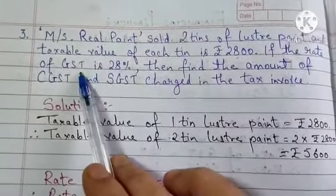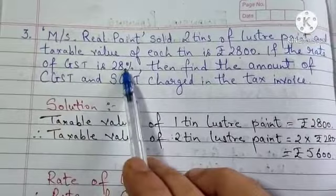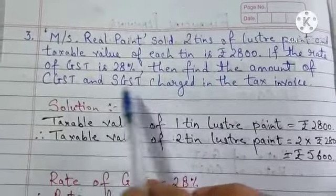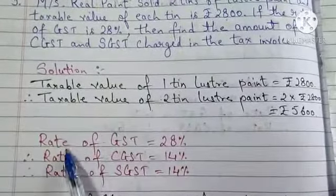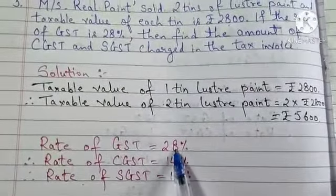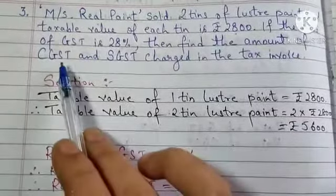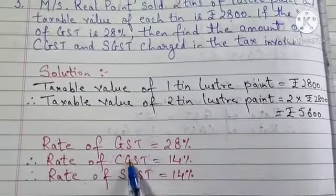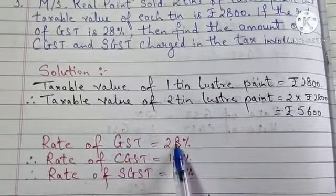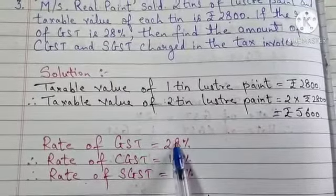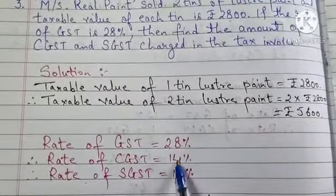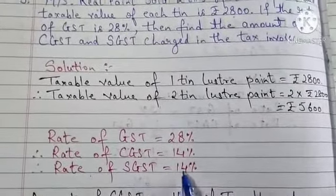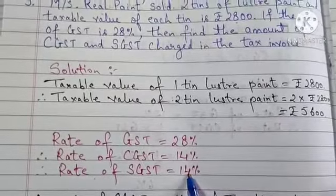Now students, here GST is given 28%, but you have to find the amount of CGST and SGST charged. The rate of GST is 28%. The rate of CGST is 50%, that is half of 28. So half of 28 is 14%. Whatever your CGST is, that is equal to your SGST, 14%.